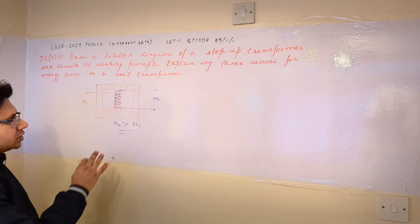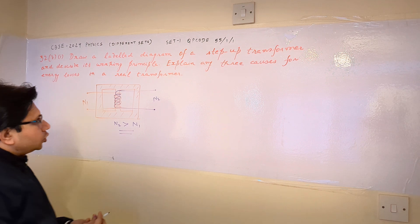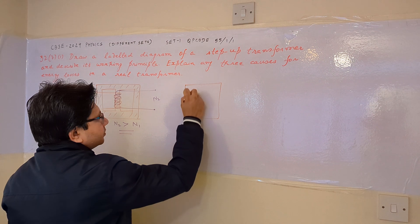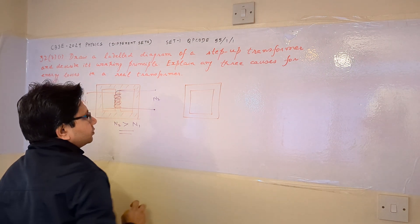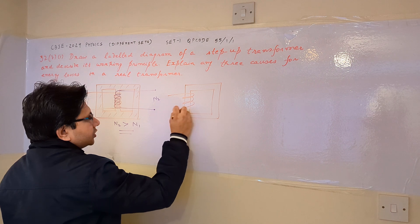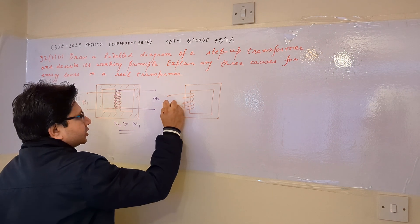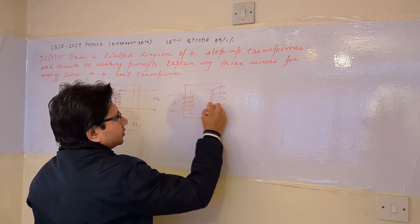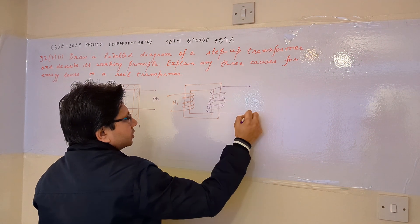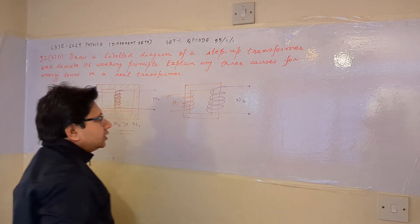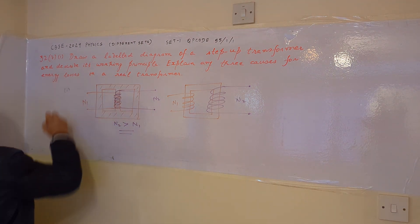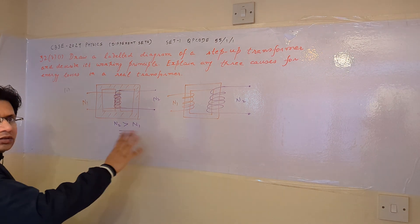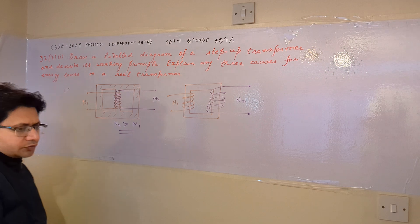Another labeled diagram can look like this: the primary side has N1 number of turns, and the secondary side has a greater number of turns N2. You can draw either of these diagrams as the labeled diagram for a step-up transformer.